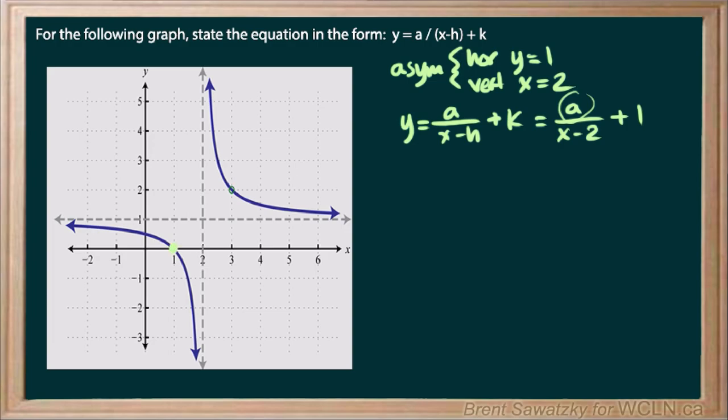Well, we have this point here. And that's saying that when x is 1, y is 0. We also have a point up a little ways. And that one is when x is 3, y is 2.